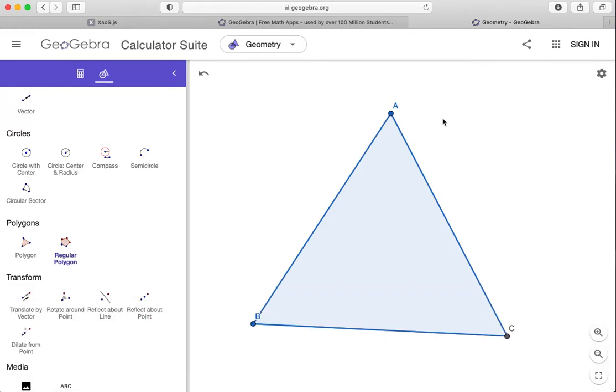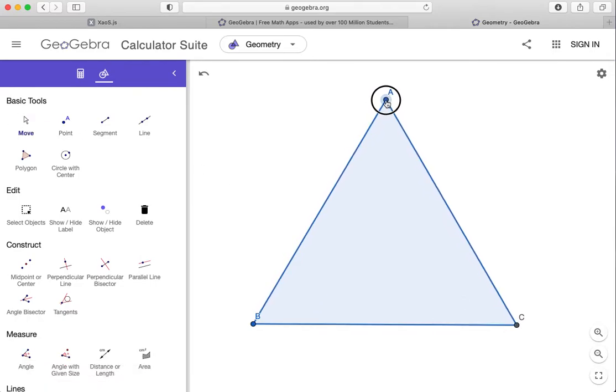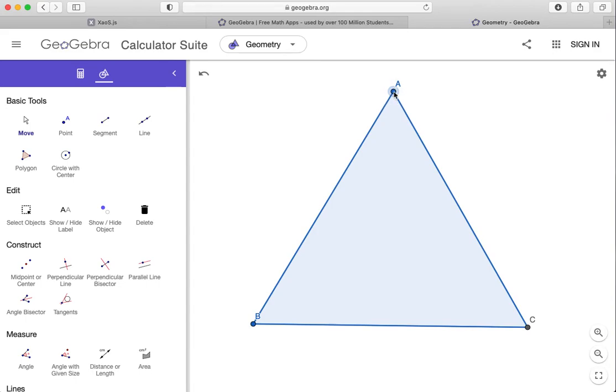I can move that point once I click on the Move tool to make my triangle look a little bit bigger and a little flatter.